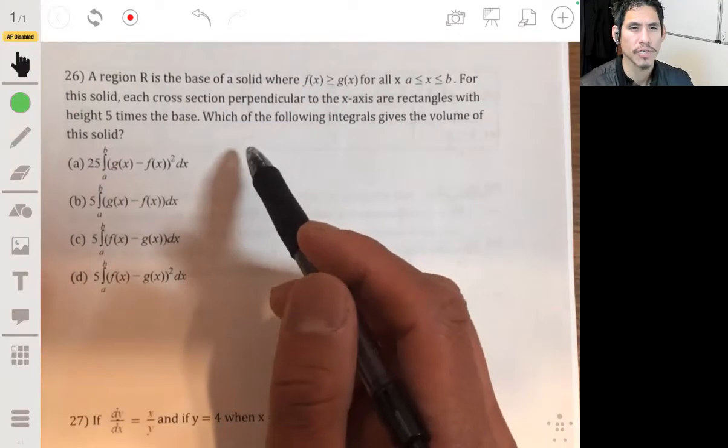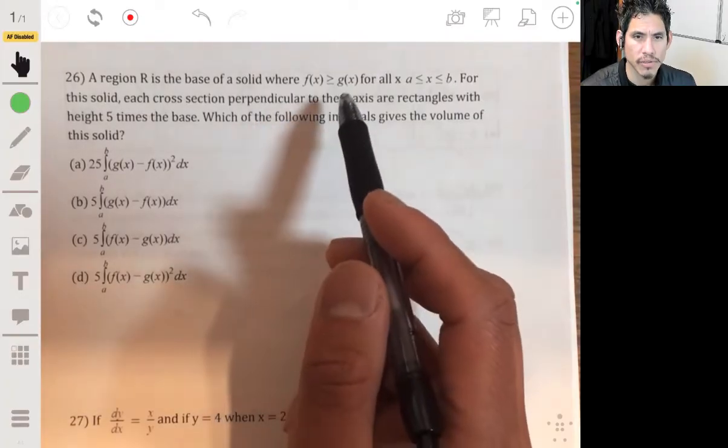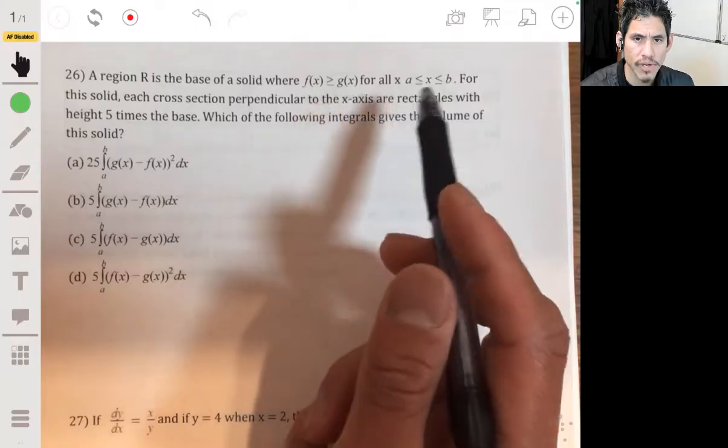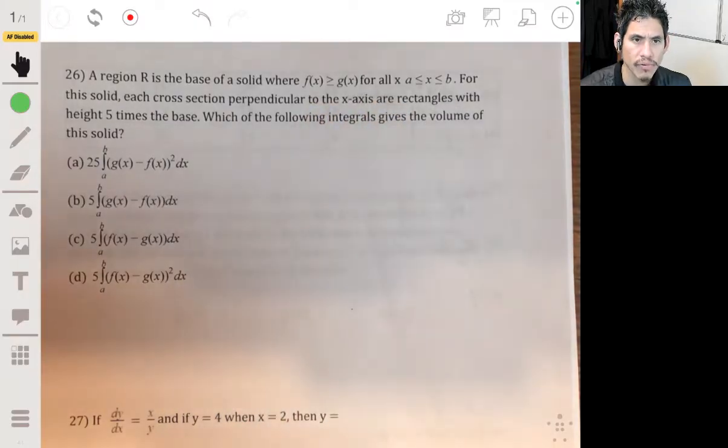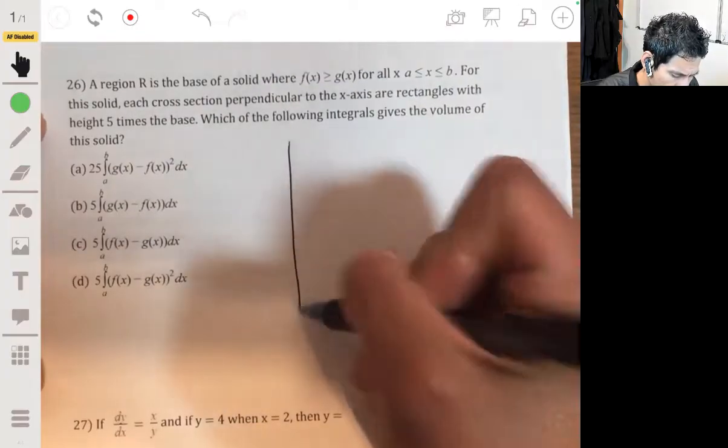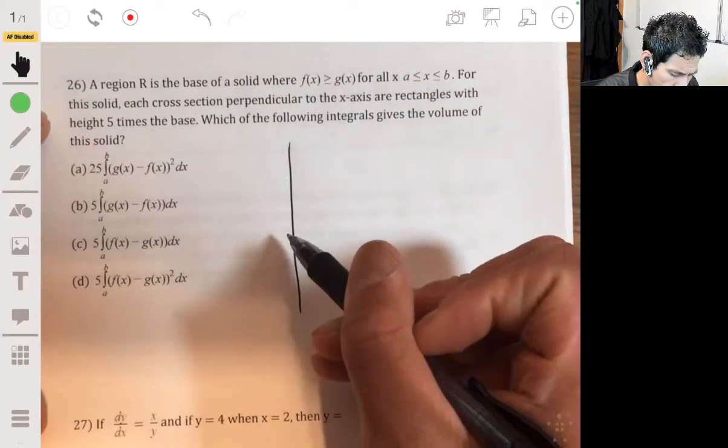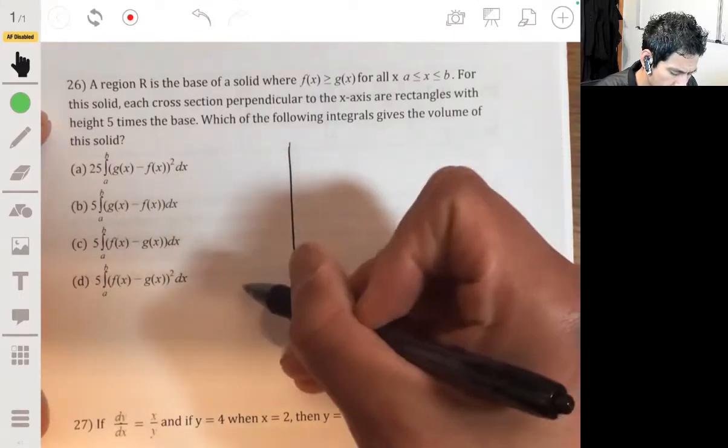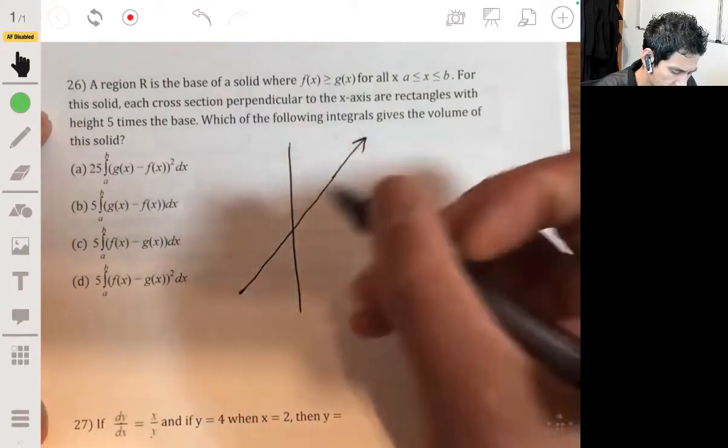Alright, problem 26. We have a region R that's the base of a solid where f(x) is always greater than g(x) from the interval a to b. For the solid, each cross-section perpendicular to the x-axis are rectangles with height five times the base. Which of the following integrals gives the volume of the solid? These ones I always like to draw a sketch. It tends to help my students.